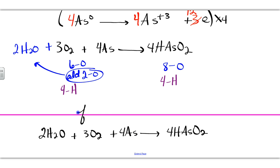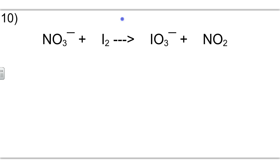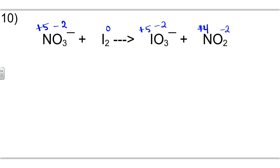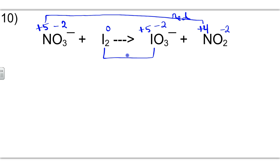Our final answer is written below. Now for the next problem, assigning oxidation states: we get a negative 2. This has to be plus 5. This is neutral, so it's 0. Oxygen is negative 2, so plus 4. There is a change in oxidation from nitrogen — this is the reduction — and iodine undergoes oxidation.